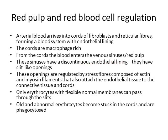These sinuses are unique in that they have a discontinuous endothelial lining. Most of the endothelium in our vasculature ought to be smooth and consistent without openings, but the venous sinuses in the spleen are an exception — they have slit-like openings referred to as fenestrations. These openings are regulated by fibers consisting of actin and myosin, which can contract to allow these openings to close or open as necessary. These filaments also attach the venous sinuses to the connective tissue cords.